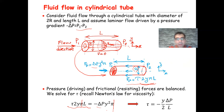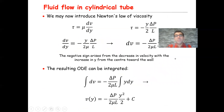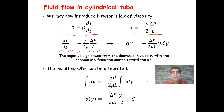Setting these forces equal: tau·2·pi·y·L equals minus delta P·pi·y². Cancelling pi and one factor of y, we get tau equals minus (y/2)·(delta P/L). From Newton's law of viscosity, tau equals mu·dv/dy, so we can equate these two expressions. Therefore, dv/dy equals minus y/(2·mu) times delta P/L, or equivalently, dv equals minus (delta P)/(2·mu·L) times y·dy.